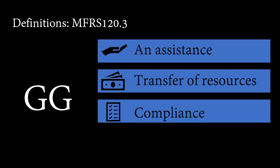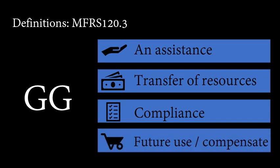Which means, if the entity did not comply with the condition given, it might be required to repay the resources transferred or it might not be granted with transfer of resources. And the resources can be transferred either for future consumption of the entity or for payment of expenses that have already been incurred by the entity, just like a refund or compensation.